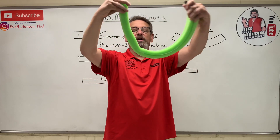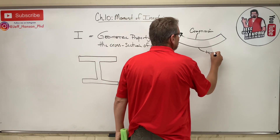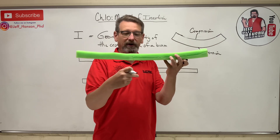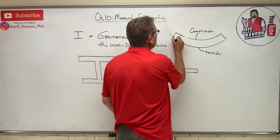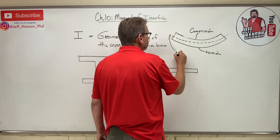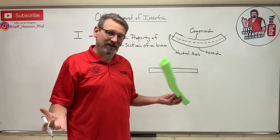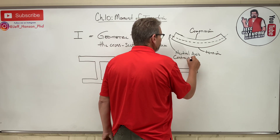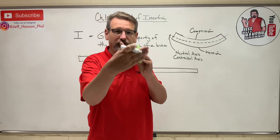What about the bottom side of the beam? It's not wrinkled at all. You can bend it a whole lot and it doesn't ever wrinkle, because the bottom part of the beam is being stretched — it is in tension. At some point in this beam it's got to go from compression to tension. It switches right in the middle, and that middle is called the neutral axis — because nothing's going on there. It's also called the centroidal axis.